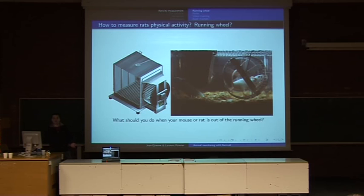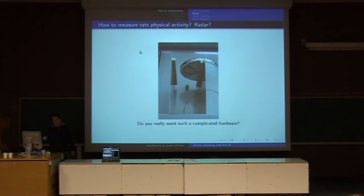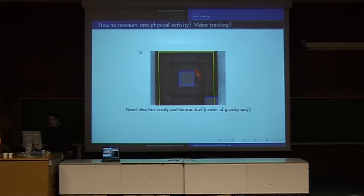Another thing that was published in an open access publication was using a radar with a complicated device, but everything was free. That's a good point. But do you really want such complicated hardware? A third method is just video tracking. You put the rat in the cage and you follow him. That's a good idea, but usually it's costly because there is no free implementation.